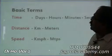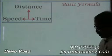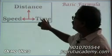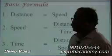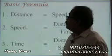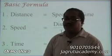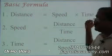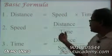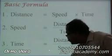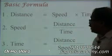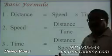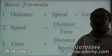Coming to these three terms — distance, speed, and time — these are the formulas. The basic formula for time and distance: distance is equal to speed into time. Speed is equal to distance by time. And time is equal to distance by speed. Please note down this formula.